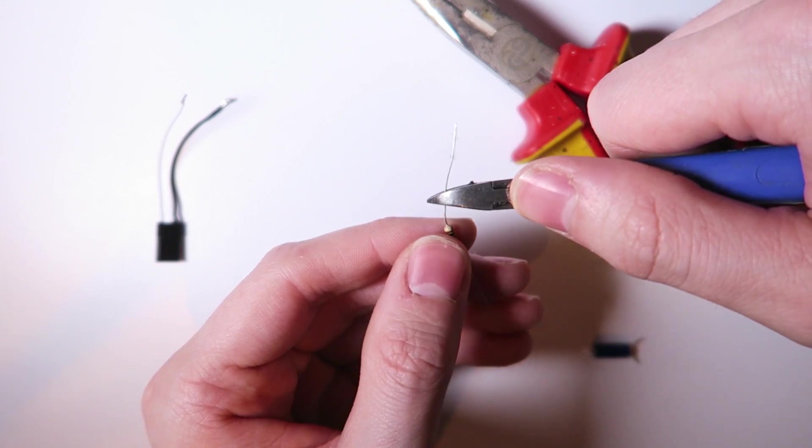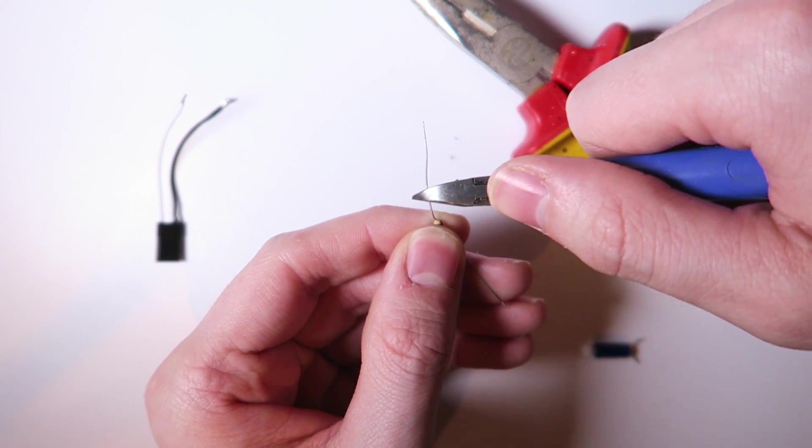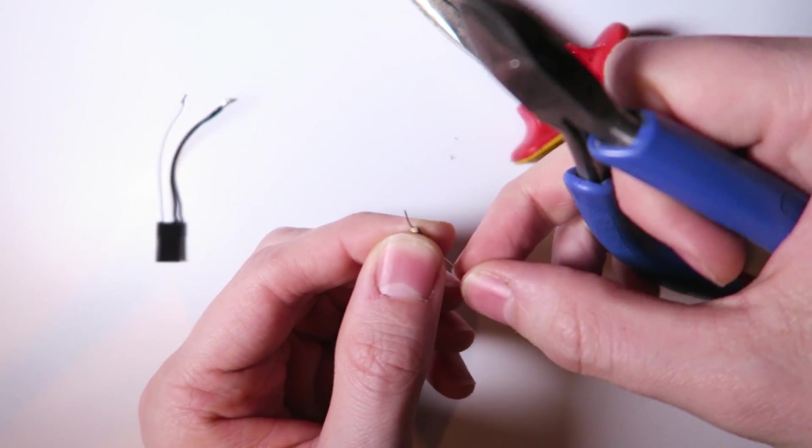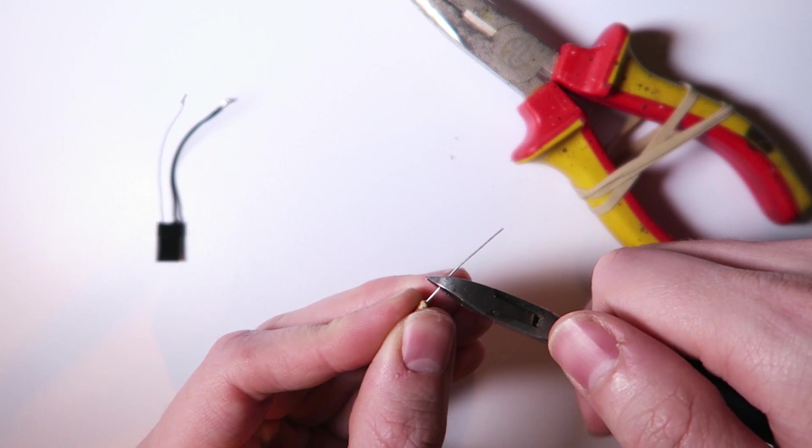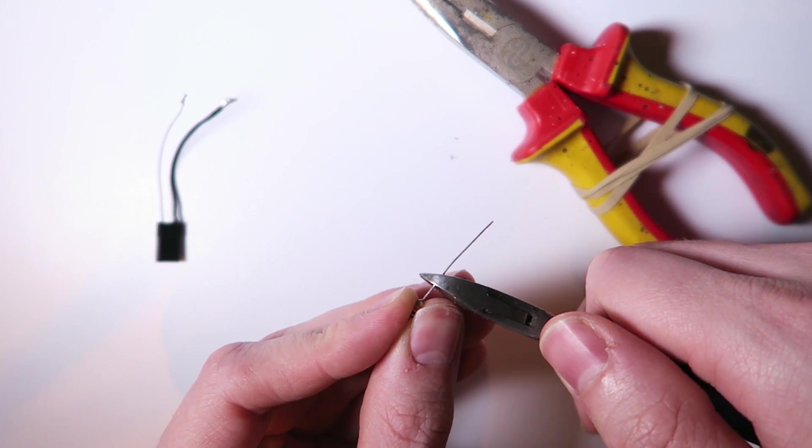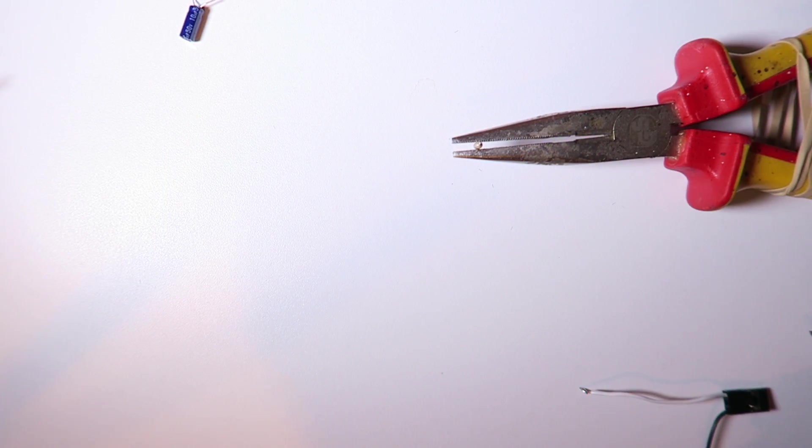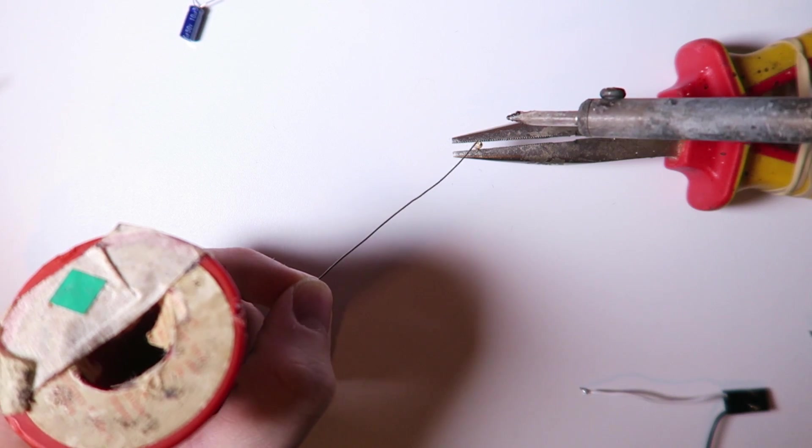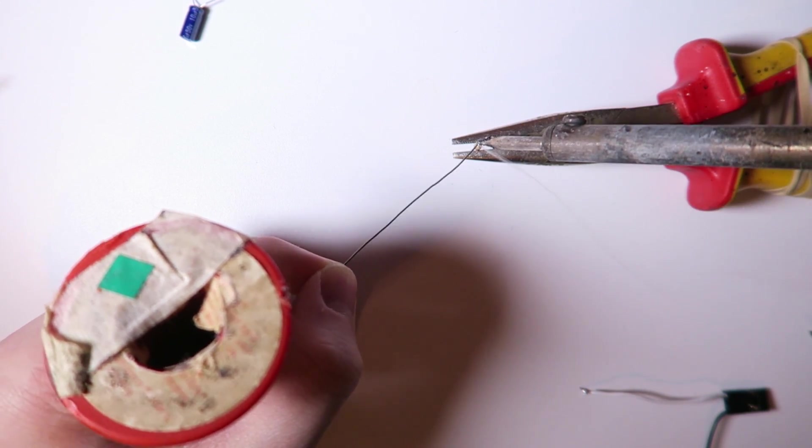Now I'm going to cut the resistor short. Not too short, but just enough so that we can solder it. As I say, we want a nice neat job here. So I've got the resistor in the helping hands now and I'm tinning that.